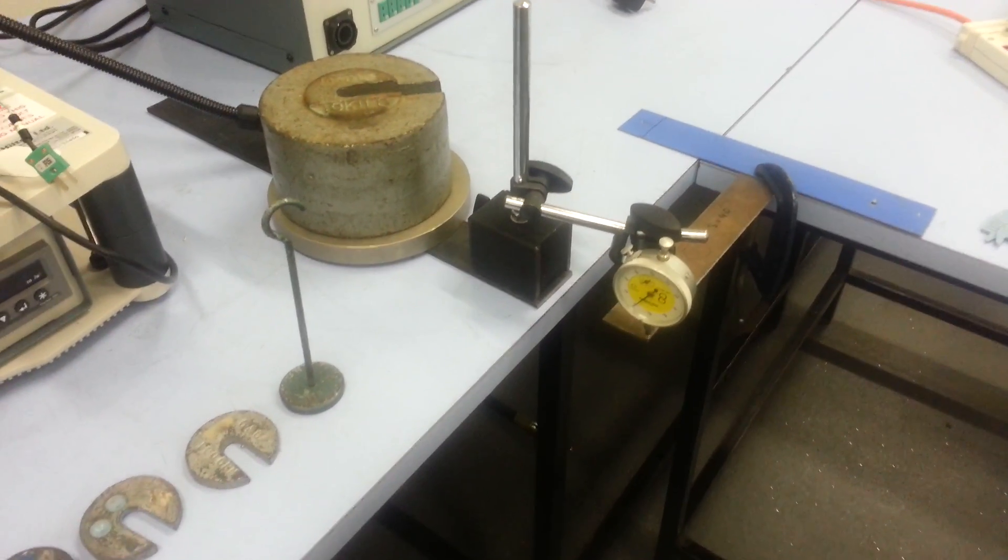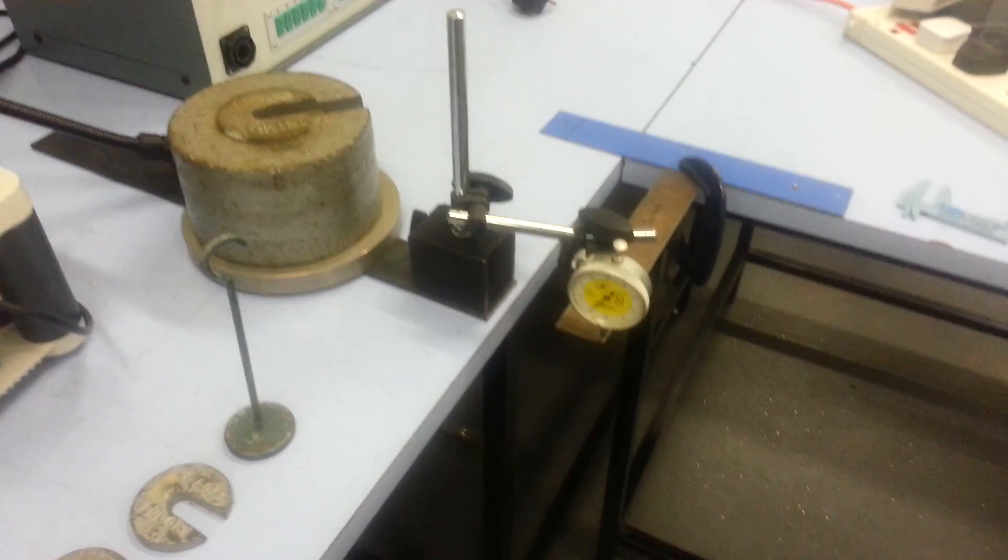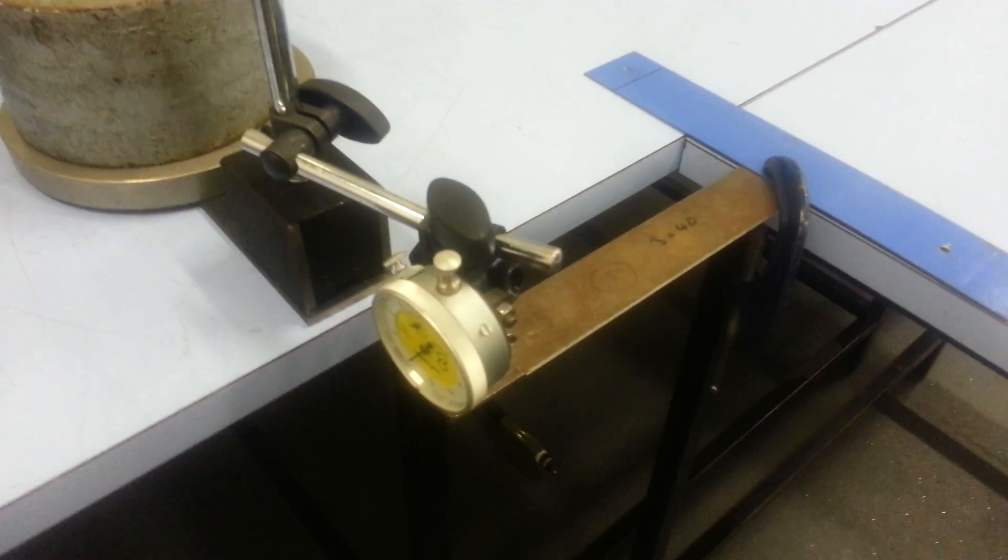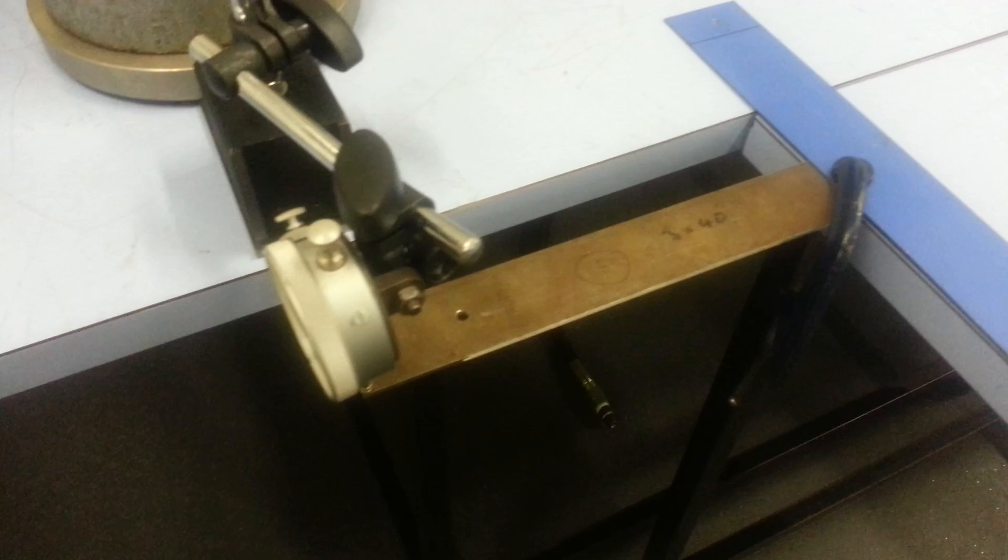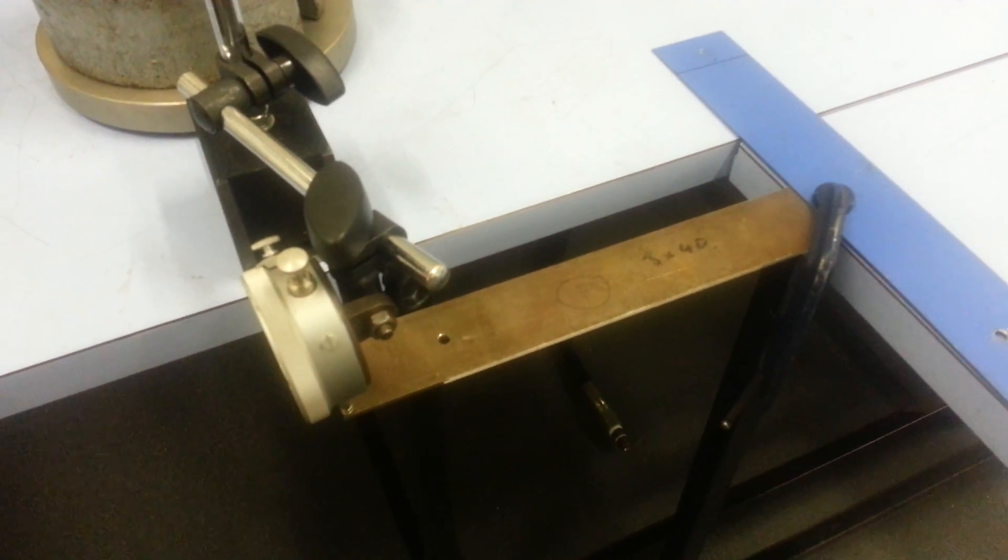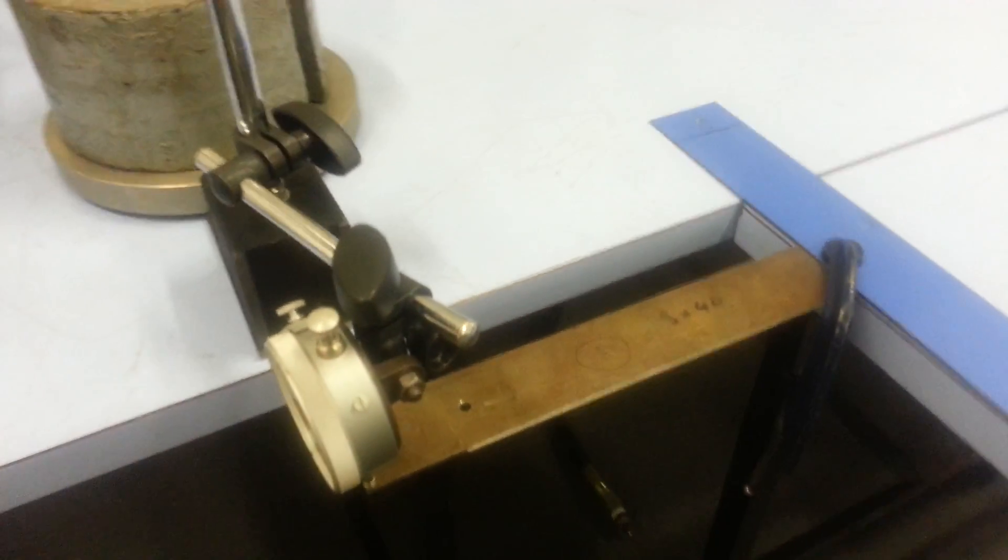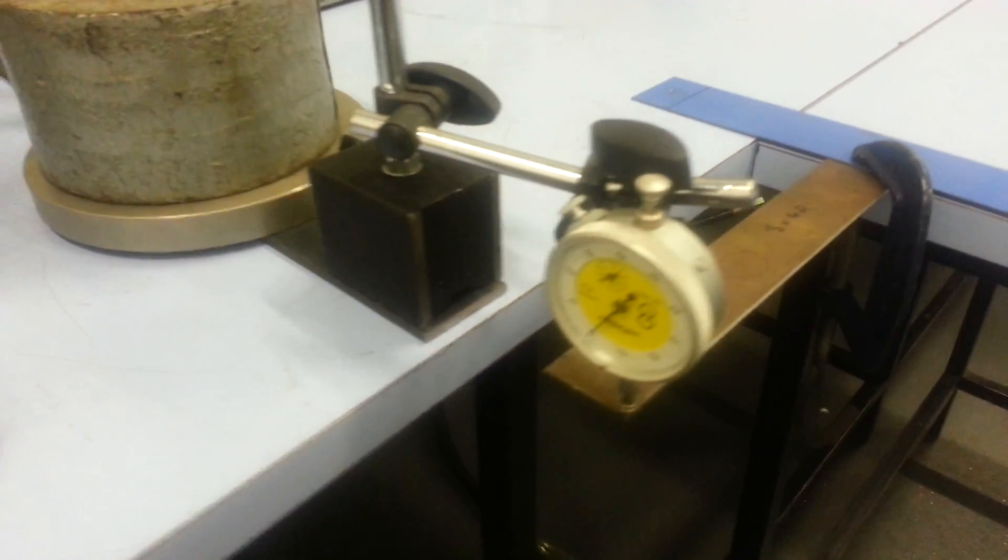Today we are going to run a very simple experiment in a cantilever beam. The cantilever beam is 248 mm long from the clamping region. It is 40 mm width and 3 mm thickness with rectangular cross-section.